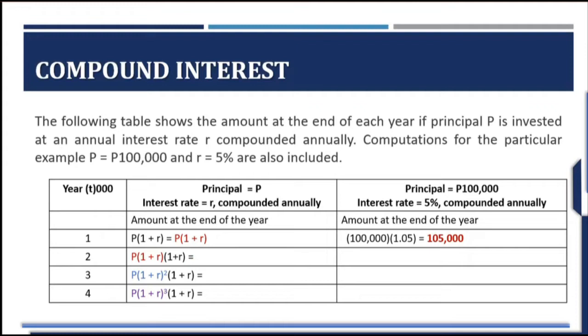For instance, we compute the interest using the formula: principal times (1 + r). That is 100,000 times (1 + 0.05), which equals 1.05. So it is equal to 105,000.